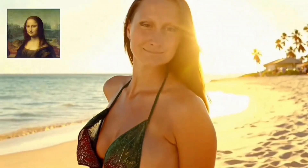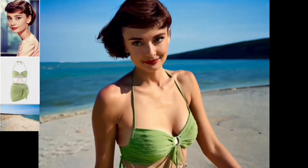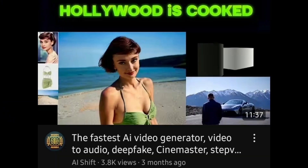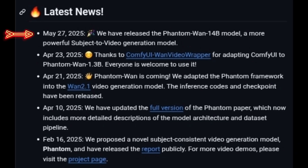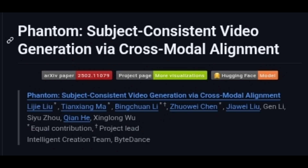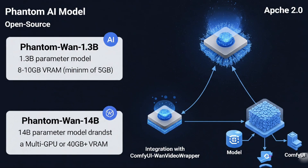Remember Phantom? The deepfake AI from ByteDance. What it does is you give it a single photo of someone, add a text prompt, and it creates a super-realistic video of that person doing what you described, keeping them looking just like themselves. The big news is the full version of Phantom is out. The Phantom code is already on GitHub, fully open source under the Apache 2.0 license. Phantom comes in two modules: Phantom 1 1.3B — 1.3B parameters, runs on a single GPU with 8–10GB VRAM, around 5GB bare minimum. Phantom 1 14B — 14B parameters — needs a multi-GPU setup or a single GPU with 40GB+ VRAM. ComfyUI integration is available via ComfyUI video wrapper for both models.